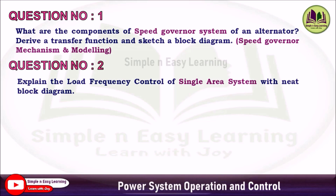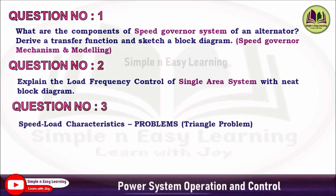Question 2: Explain the load frequency control of a single area system with a neat block diagram. Derive the expression for load frequency control in both static and dynamic analysis, for uncontrolled and controlled cases. Question 3 (Priority 3): Speed load characteristics problem — the triangle type problem.